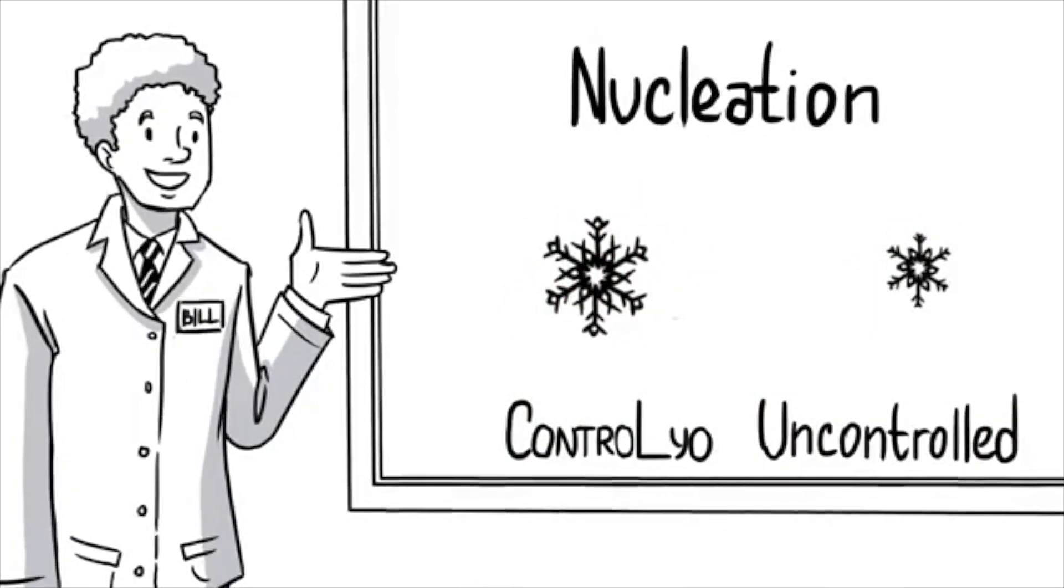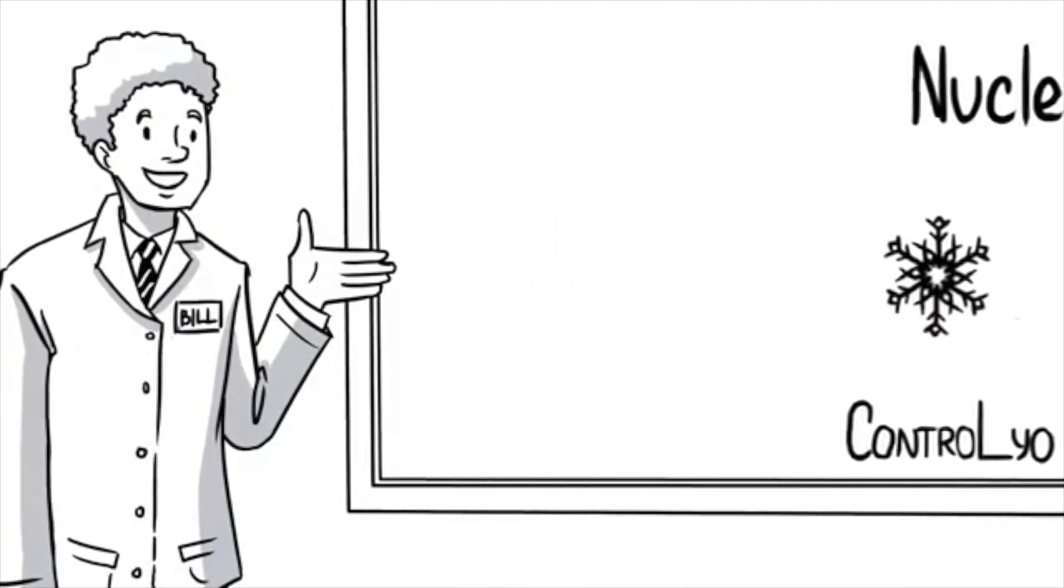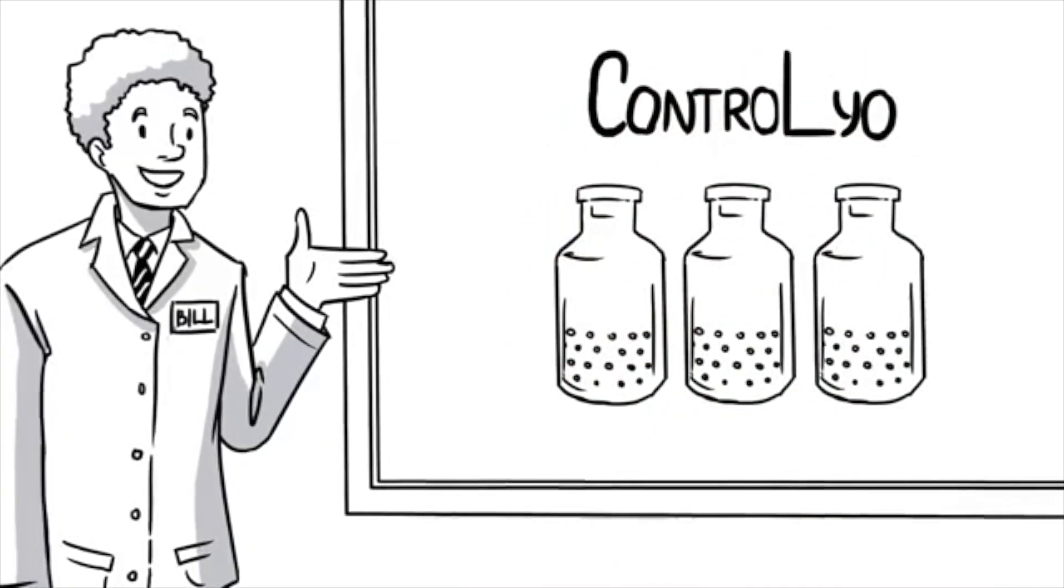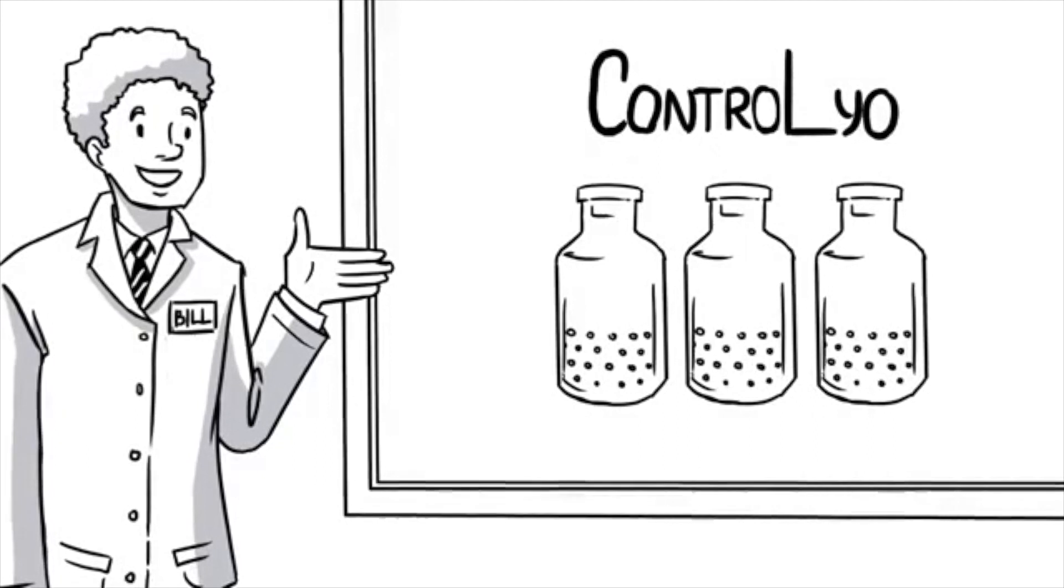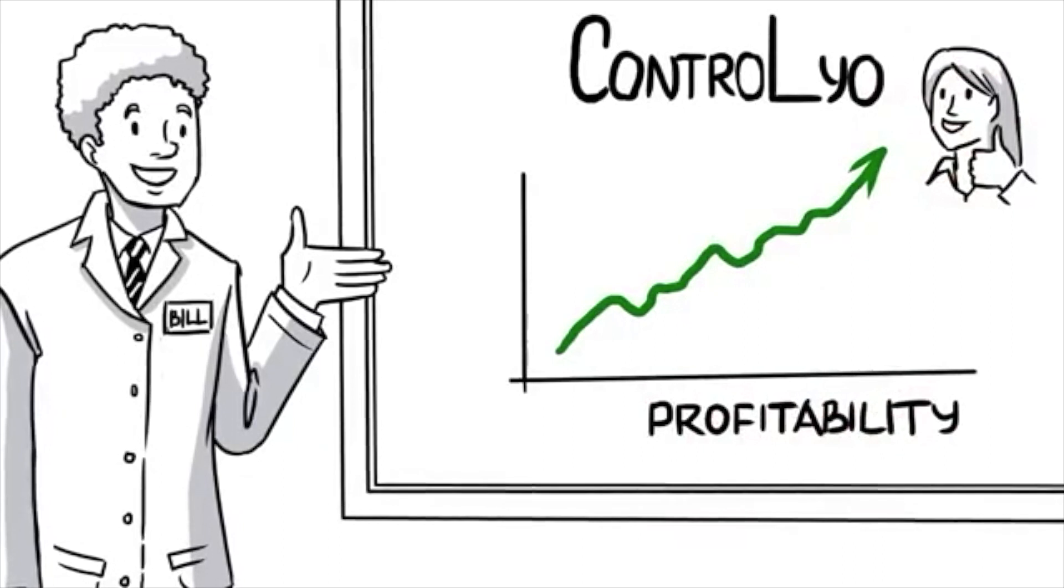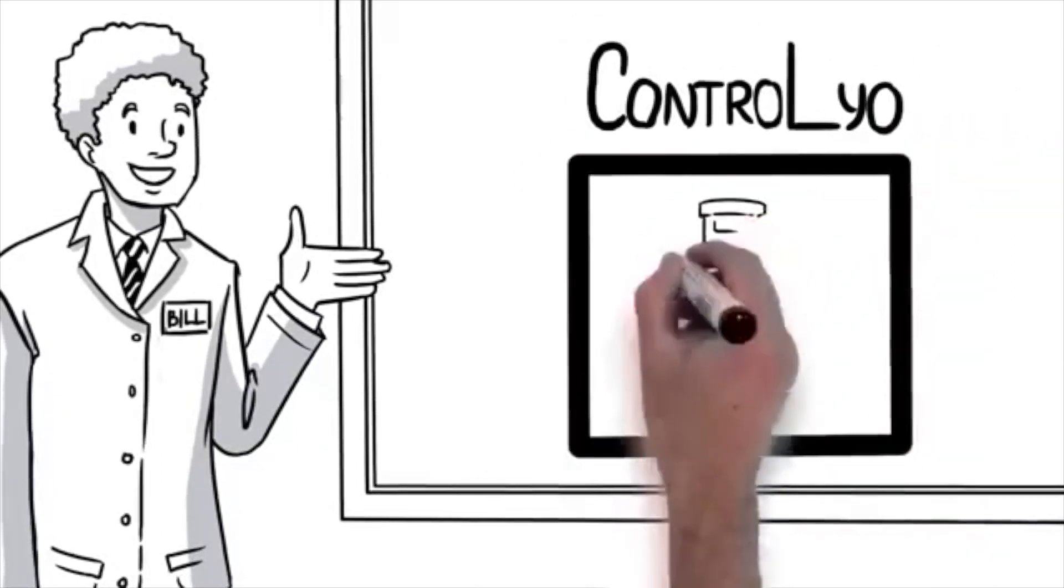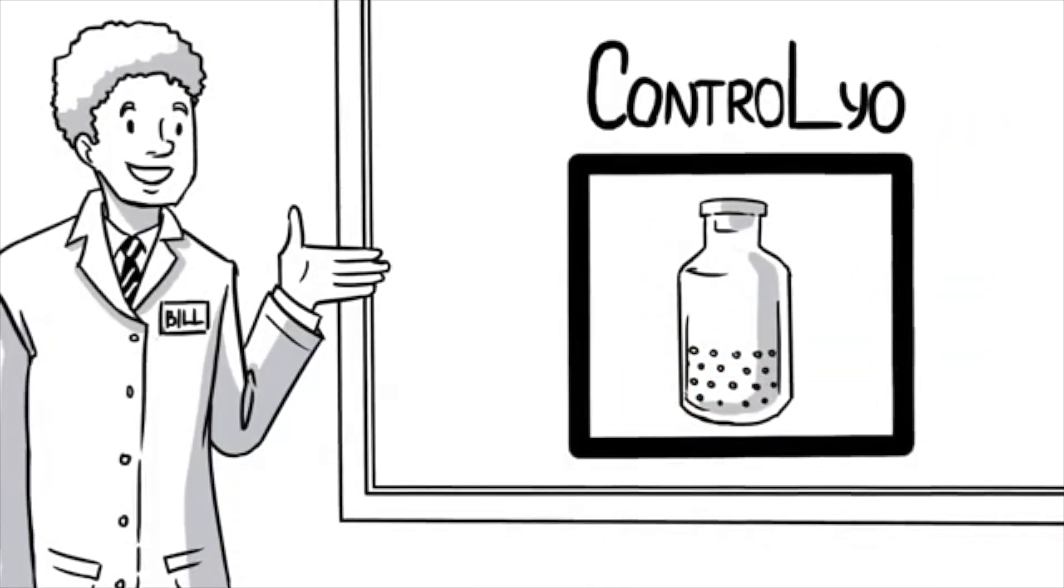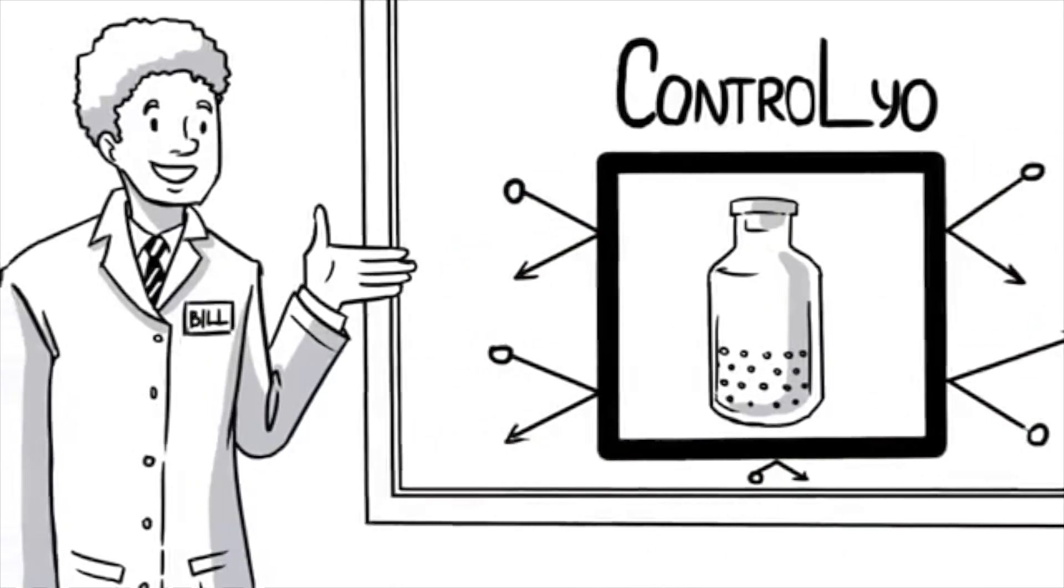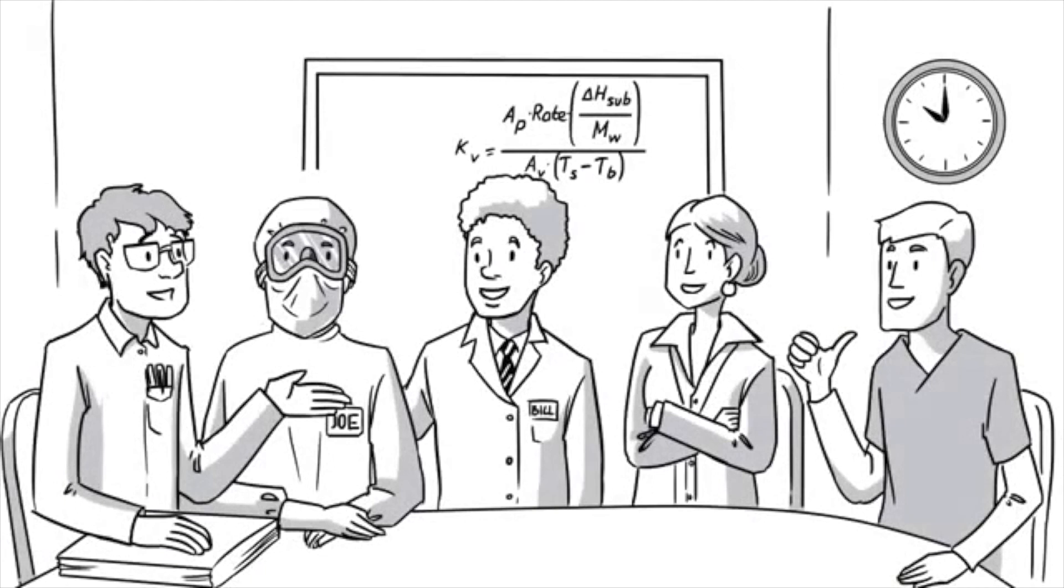These larger crystals allow faster sublimation due to less product resistance. Basically, having this control can mean shorter run times, reduced breakage, and improved batch homogeneity, which translates into increased profitability and happier customers. And it's all done while maintaining a sterile boundary. No foreign particles enter the chamber, so there's no risk of contamination.